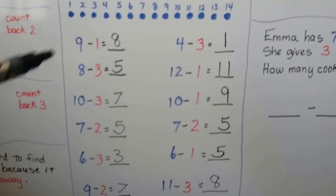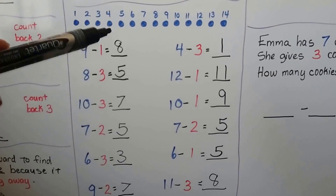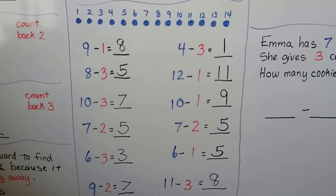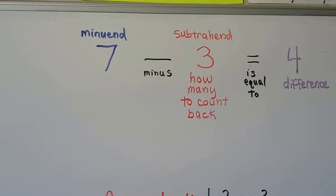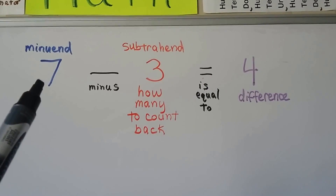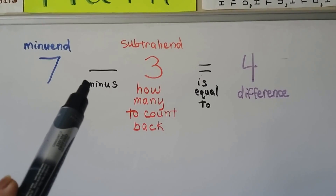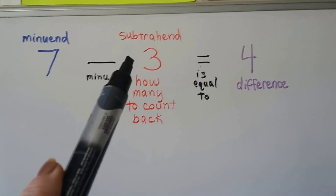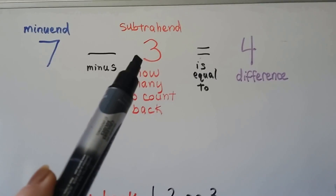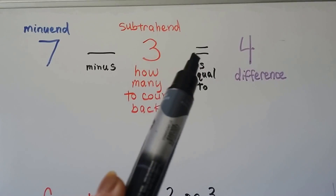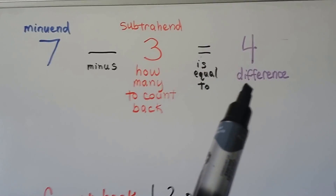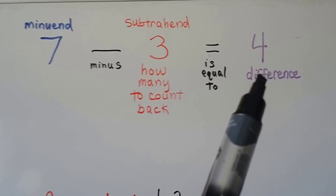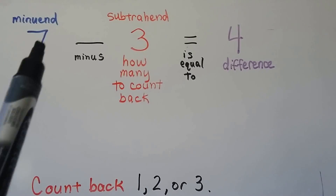We can find the differences in the subtraction facts by using the counters and counting back. In a subtraction problem, the first number is the minuend. Then we have a minus sign, and the next number is called the subtrahend — that's how many we're going to count back. This is an equal sign, and the answer is called the difference.